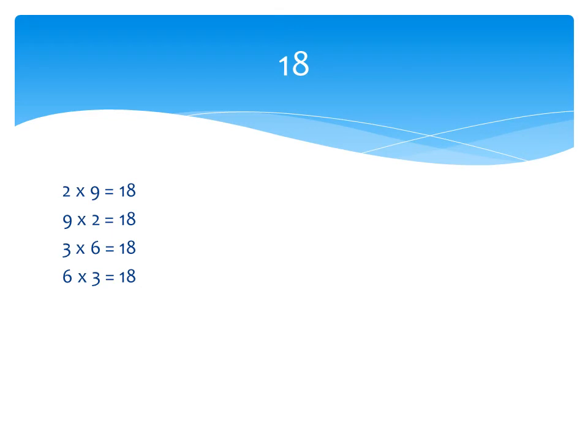Let's look at another example. Here is the multiple 18, and here are the pairs of numbers which when multiplied together make 18.